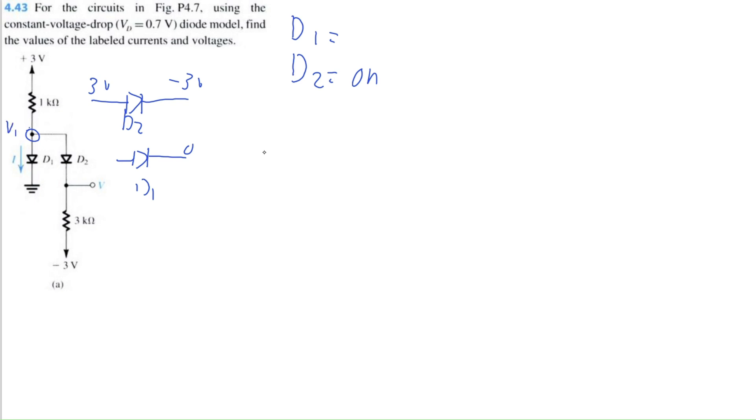If I call this V1, we can say that V1, if we just follow KVL, it's 3 volts minus the voltage drop across this 1 kilo ohm resistor. Now I'm going to ignore this diode for a moment. We have a 1 kilo ohm and a 3 kilo ohm resistor and we have a total voltage drop across the circuit of 6 volts. So I can take the total drop and multiply it by this 1 kilo ohm divided by the combination of this 1 kilo ohm and 3 kilo ohm because they are in series.